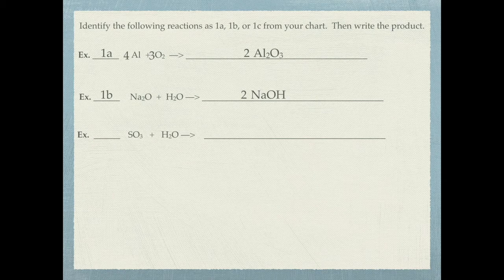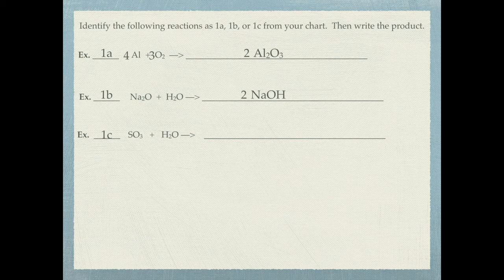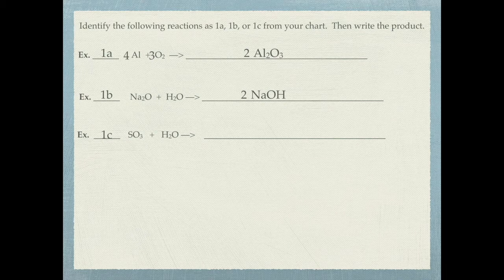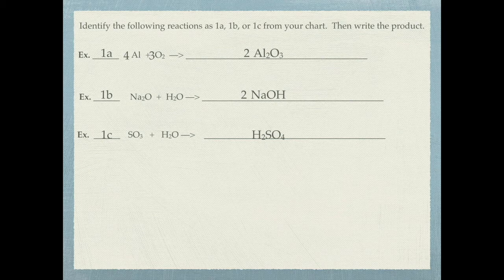The last synthesis example uses SO3. S is a non-metal followed by oxygen, so this is a 1C reaction where you balance as you go. An acid has hydrogen followed by a non-metal followed by oxygen. There are two hydrogens, giving H2, followed by the non-metal S, followed by oxygen. Counting the oxygens, you get four total, so the acid is H2SO4.